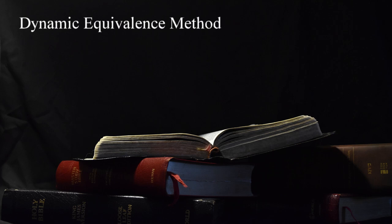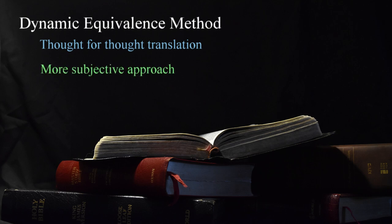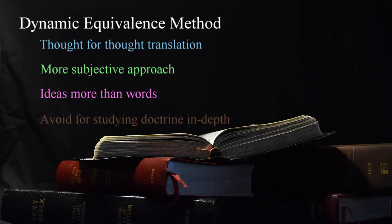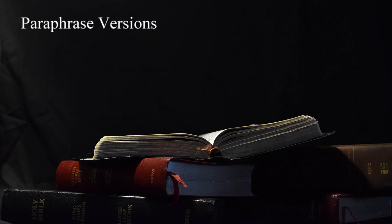A third category is referred to as the dynamic or functional equivalence method, also known as thought-for-thought translations. In this method, the translator rewords a passage in an attempt to better define what they believe was the intended meaning of the writer. This method covers a wide spectrum and can represent a more subjective attitude on the part of the translator, rendering ideas more than actual words. For that reason, some thought-for-thought translations can differ significantly from a formal or word-for-word rendering. While more readable, these are not recommended for in-depth study or review of doctrinal issues.